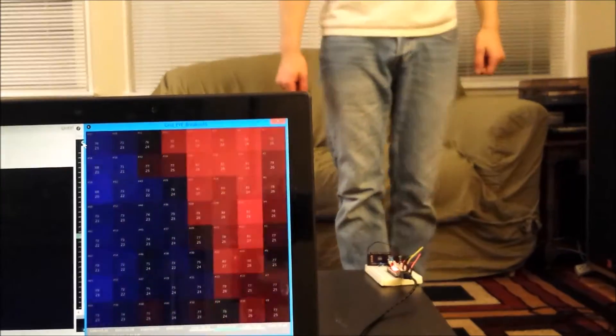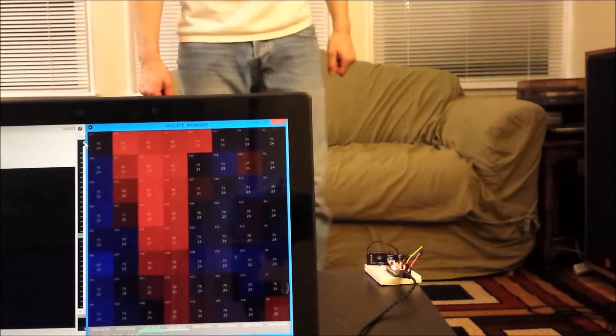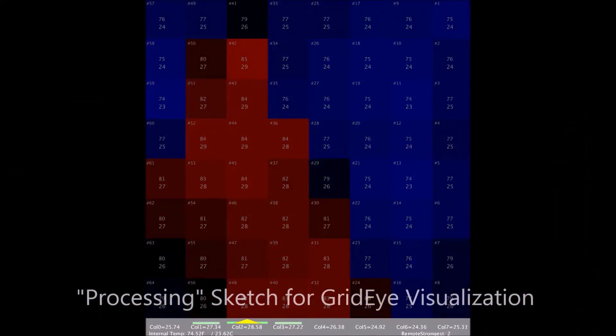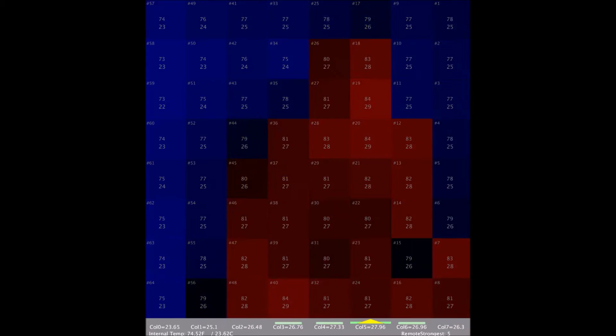The raw data from the Grid Eye is fairly noisy. There is a lot of flickering in each pixel. In this version of the script, a moving average is used. Notice the reduction in flicker.